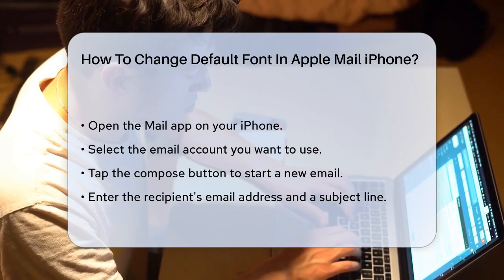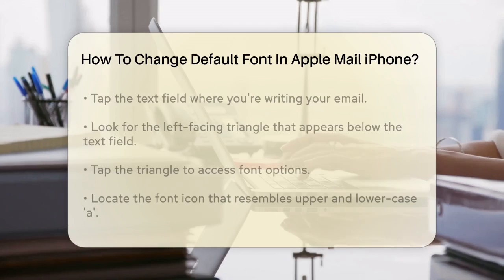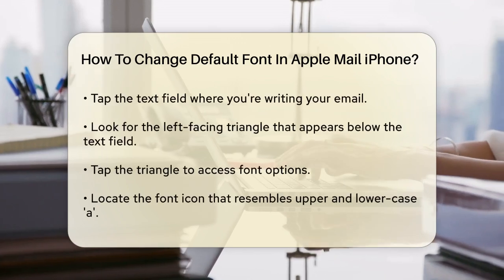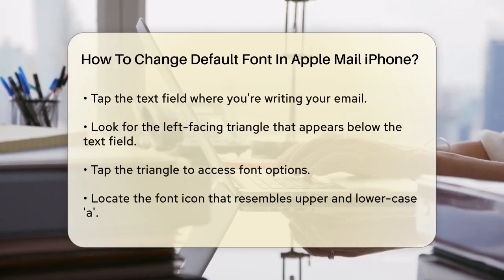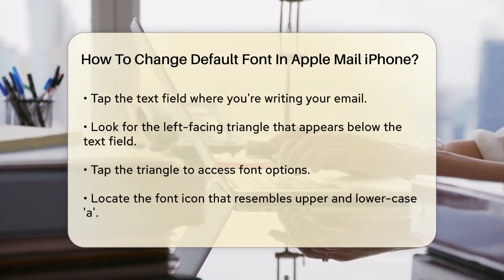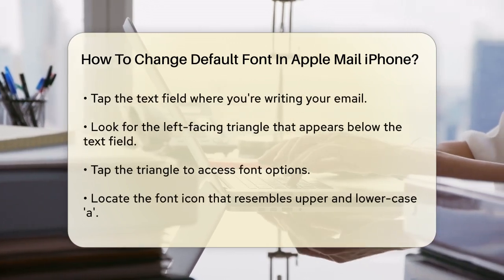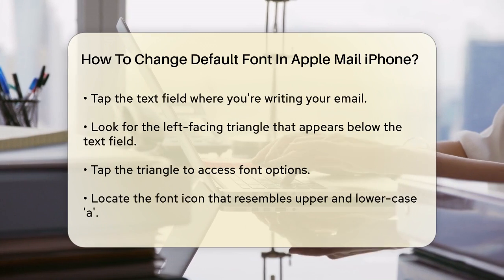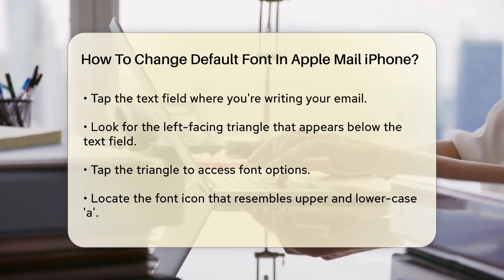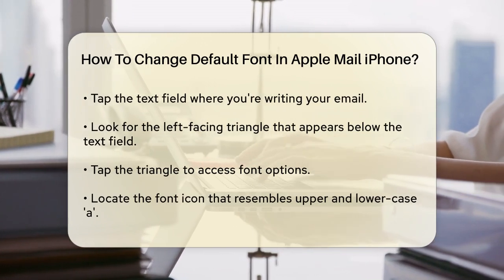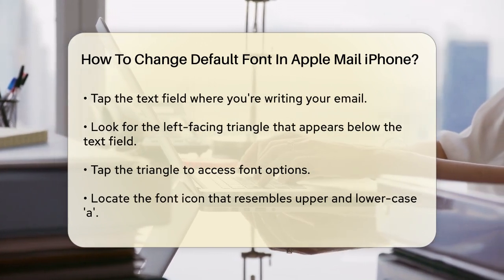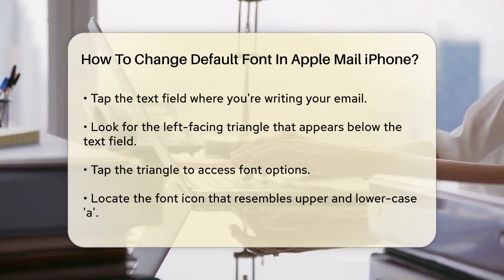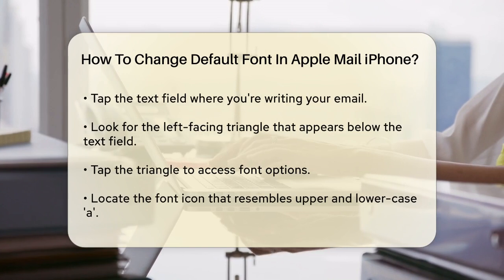Now, here's the part where you change the font. After you've started typing your email, tap the text field where you're writing. You'll see a left-facing triangle appear just below the text field. Tap this triangle.